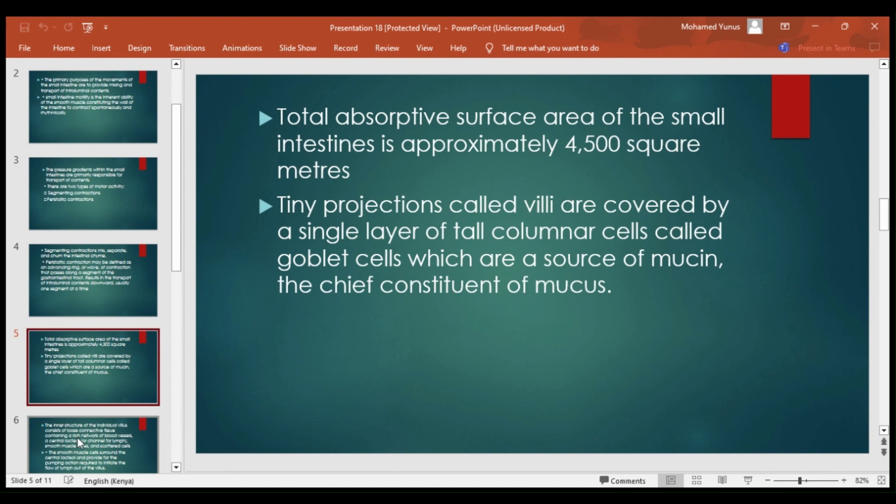The tiny projections called villi are covered by a single layer of columnar cells called goblet cells, which are the source of mucin. This mucus helps reduce friction within the intraluminal tract and helps with the smooth flow of the chyme.